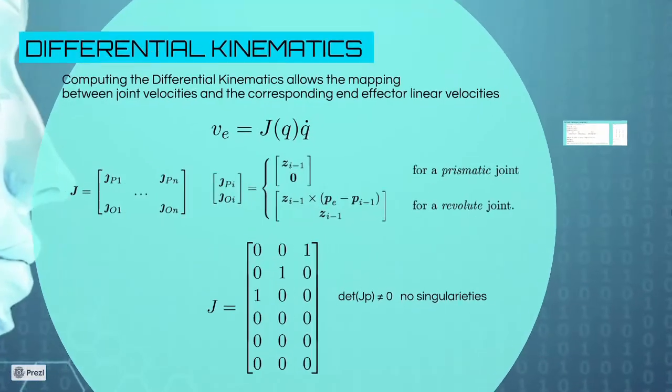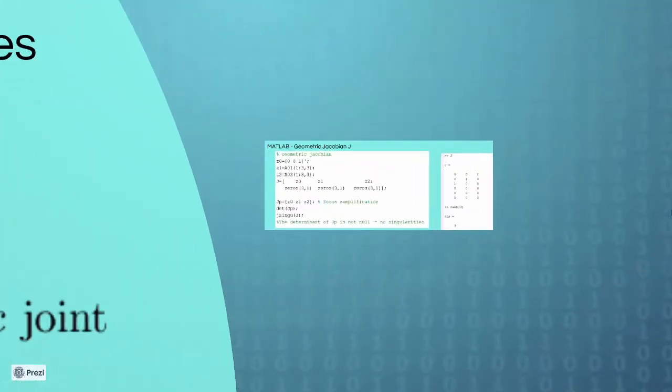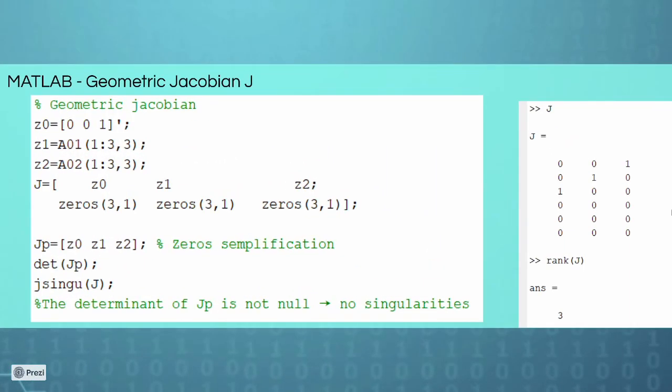Talking about the differential kinematics, we explained in the report how we obtained our Jacobian. Under MATLAB, we discovered that our determinant of the Jacobian is not null, so there are no singularities in the configuration.